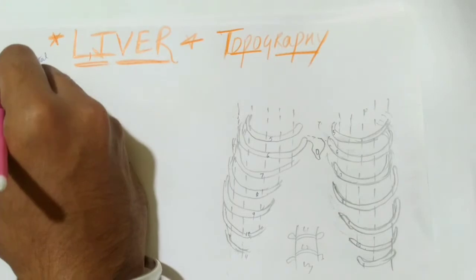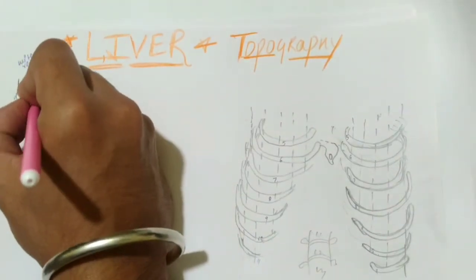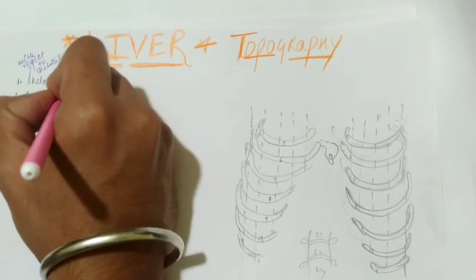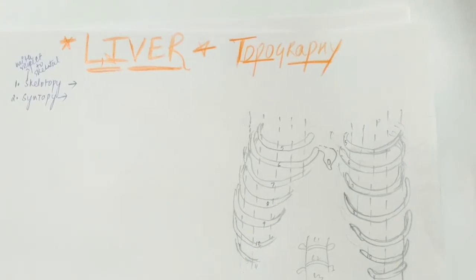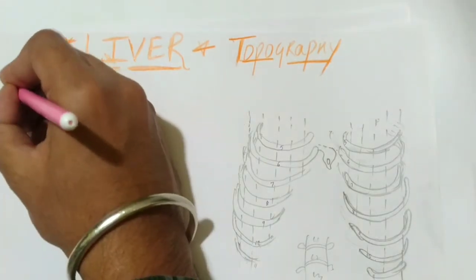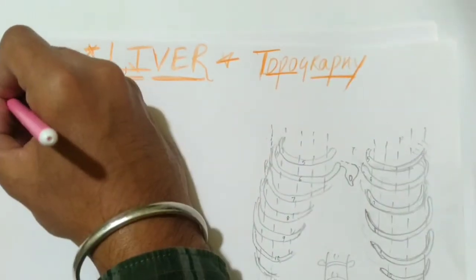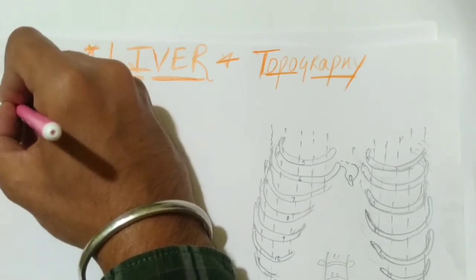The second is syntopathy. Syntopathy is the topography with respect to other organs. Other organs means what are the organs lying inferior to the liver, and the organs lying superior, lateral, anterior, or posterior. It depends on the different organs and where they lie. The syntopathy is the topography with respect to other organs.